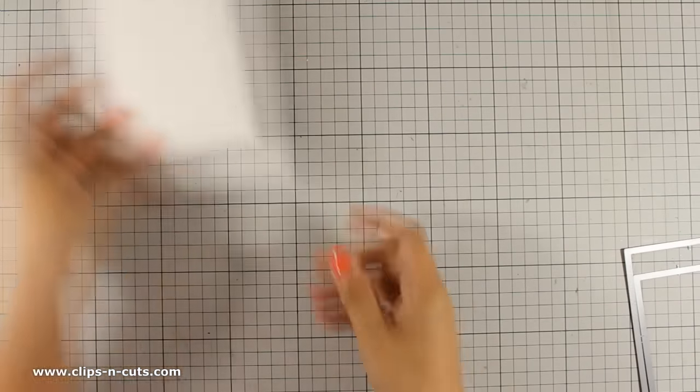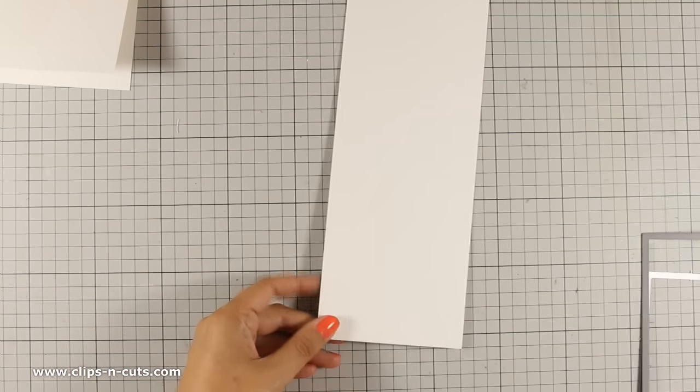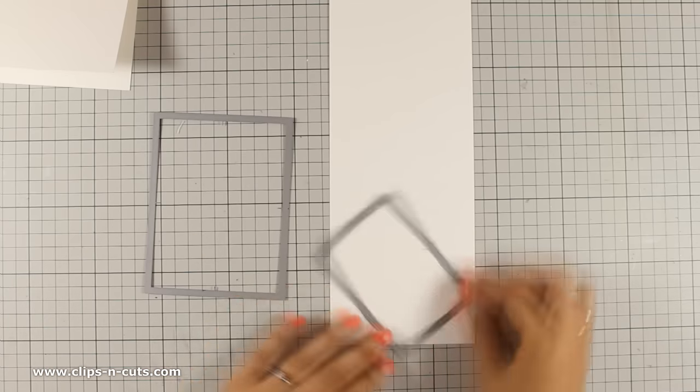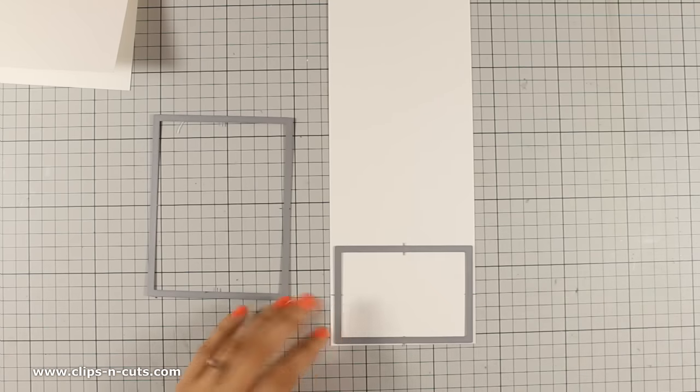From the other half of this cardstock I will be using one of these rectangular dies, these are exclusive by Simon Says Stamp and they have a nice stitching all around.